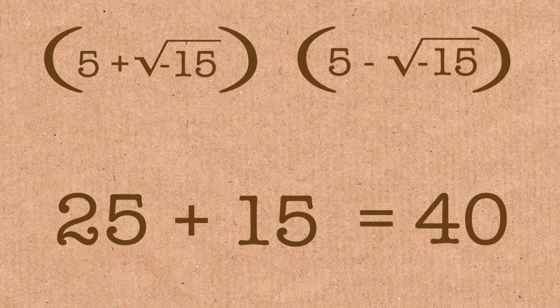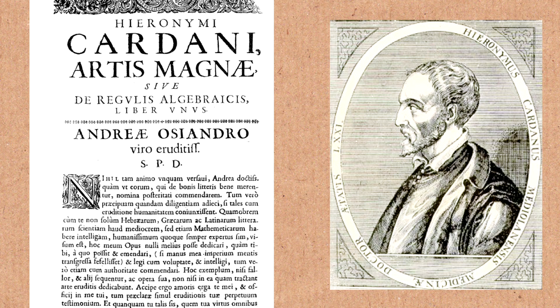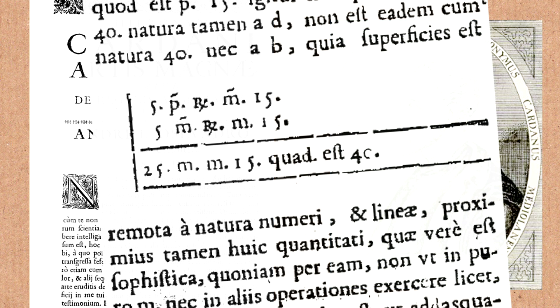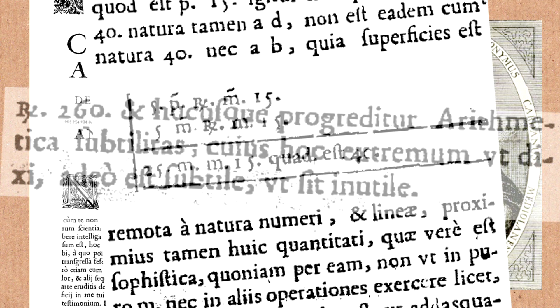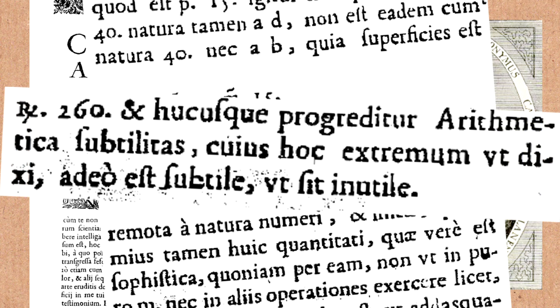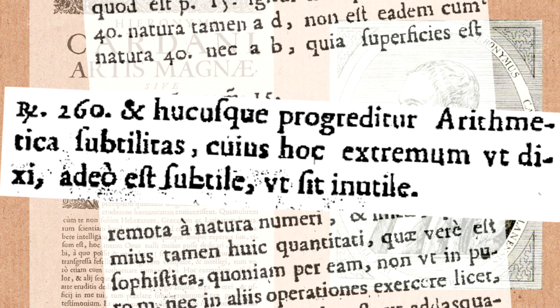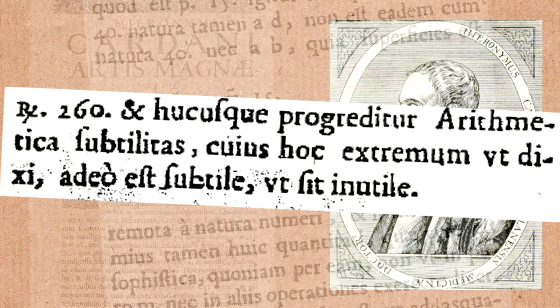And he writes, multiplying 5 plus the square root of minus 15 by 5 minus the square root of minus 15, we obtain 25 minus minus 15. And therefore, the product is 40, and thus far does arithmetical subtlety go, of which this, the extreme, is, as I have said, so subtle that it is useless.